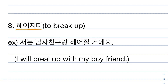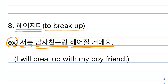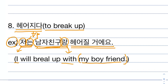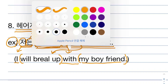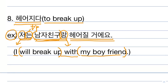Number eight. 헤어지다 means to break up. Example: 저는 남자친구랑 헤어질 거예요. 저 is 'I' in a polite way, 는 is topic particle, 남자친구 is my boyfriend, 랑 is 'with', and 헤어질 거예요 means will break up. Oh, here is my mistake — 저는 남자친구랑 헤어질 거예요 means 'I will break up with my boyfriend.'